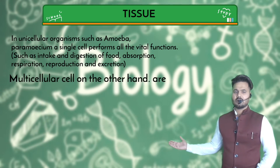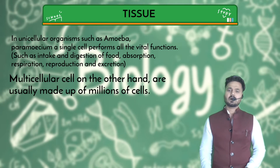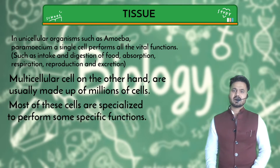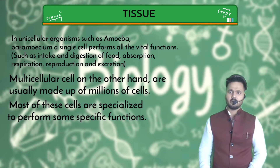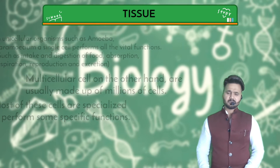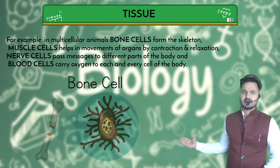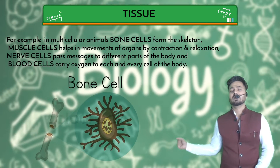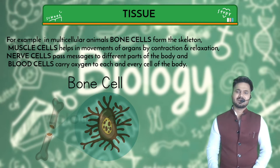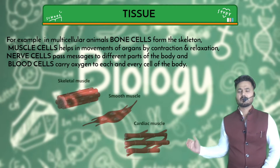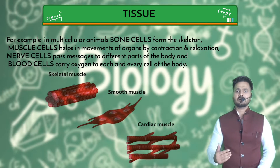On the other hand, multicellular organisms are made up of millions of cells. Most of these cells are specialized to perform particular functions. For example, bone cells are responsible for the movement of the body, so that you can move in the forward and backward direction.